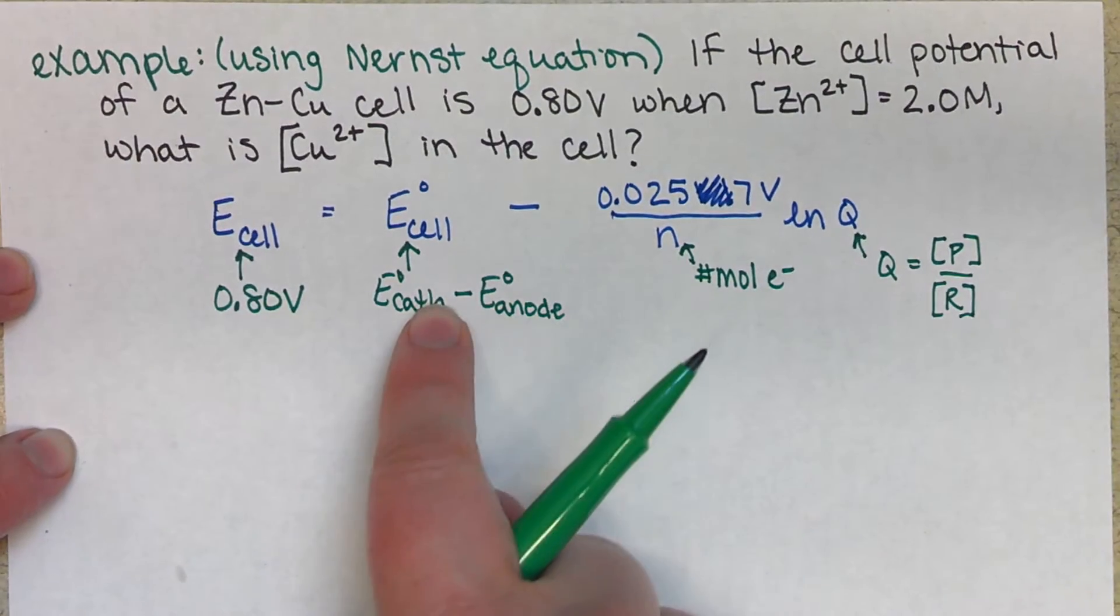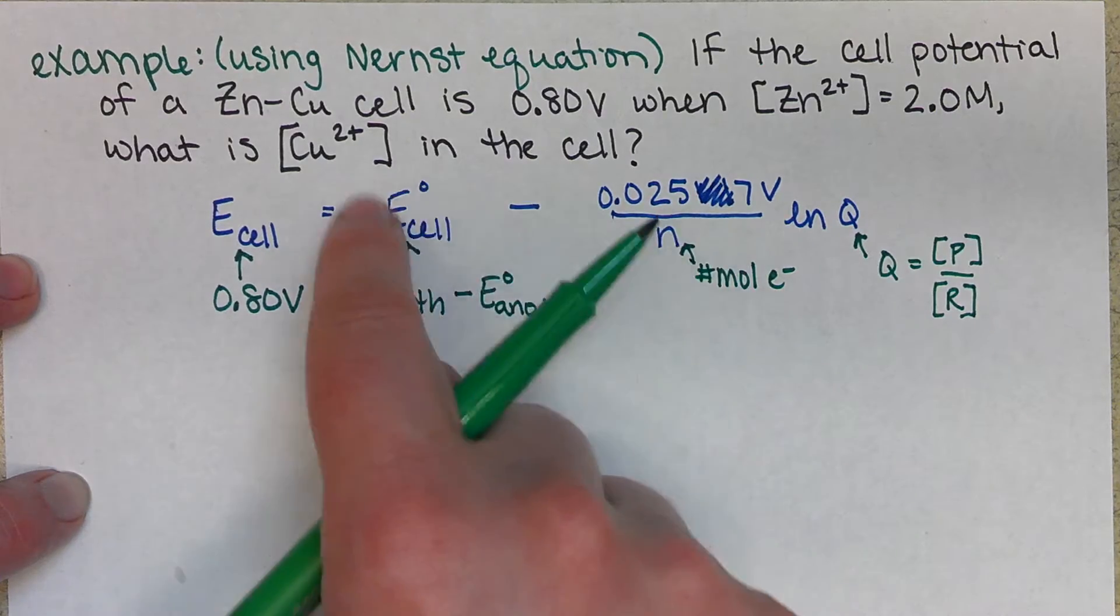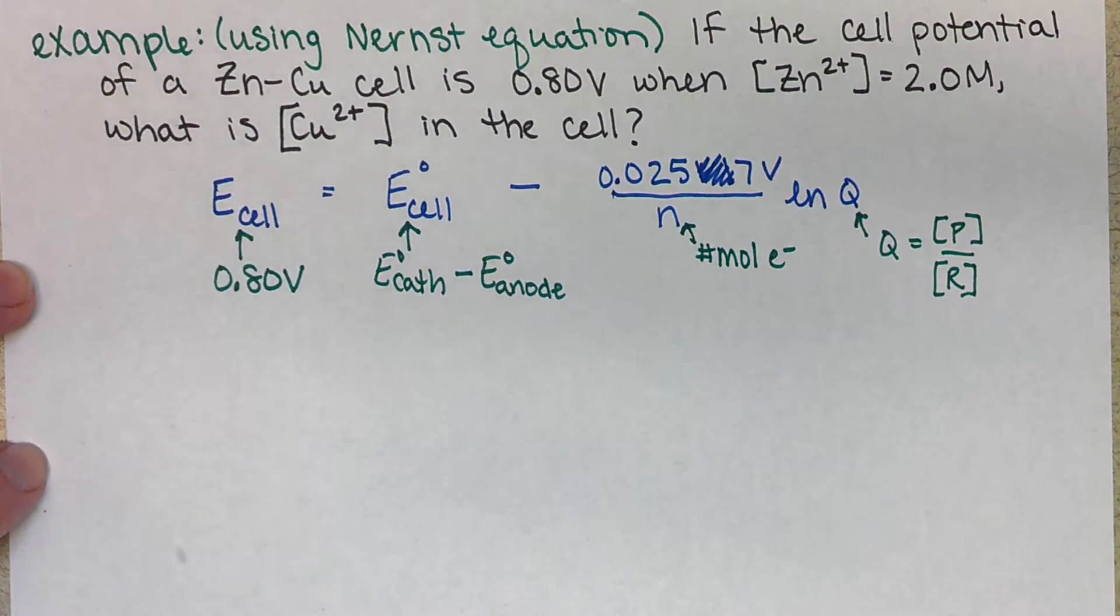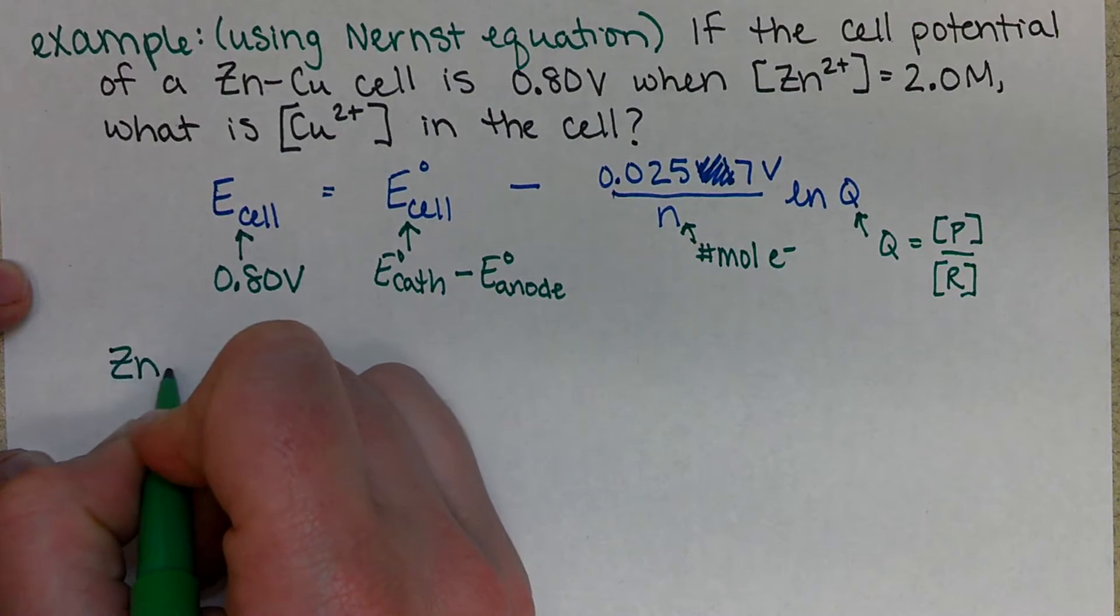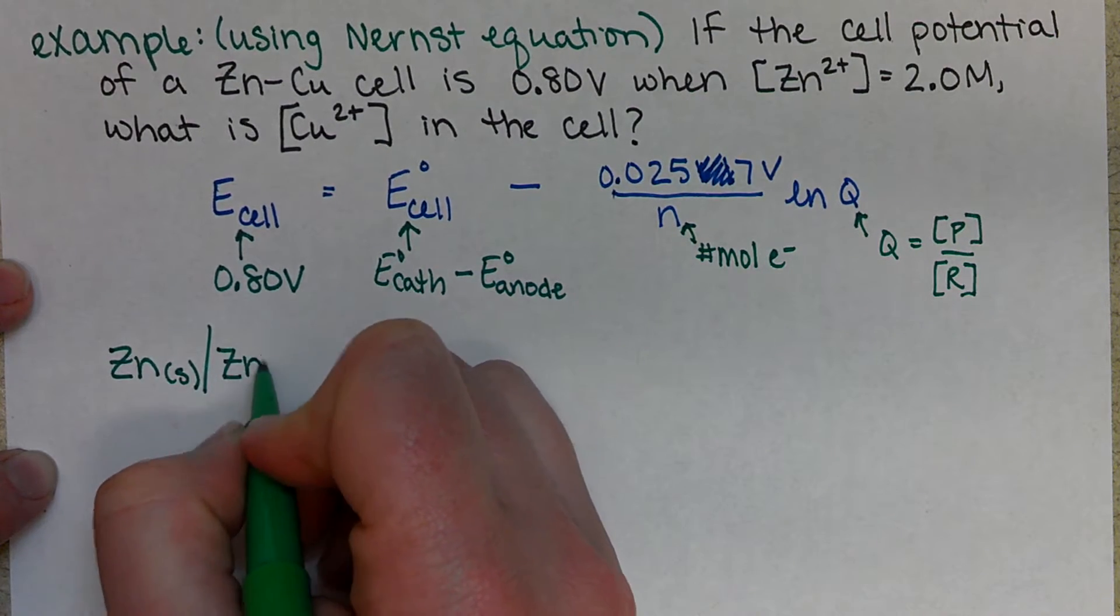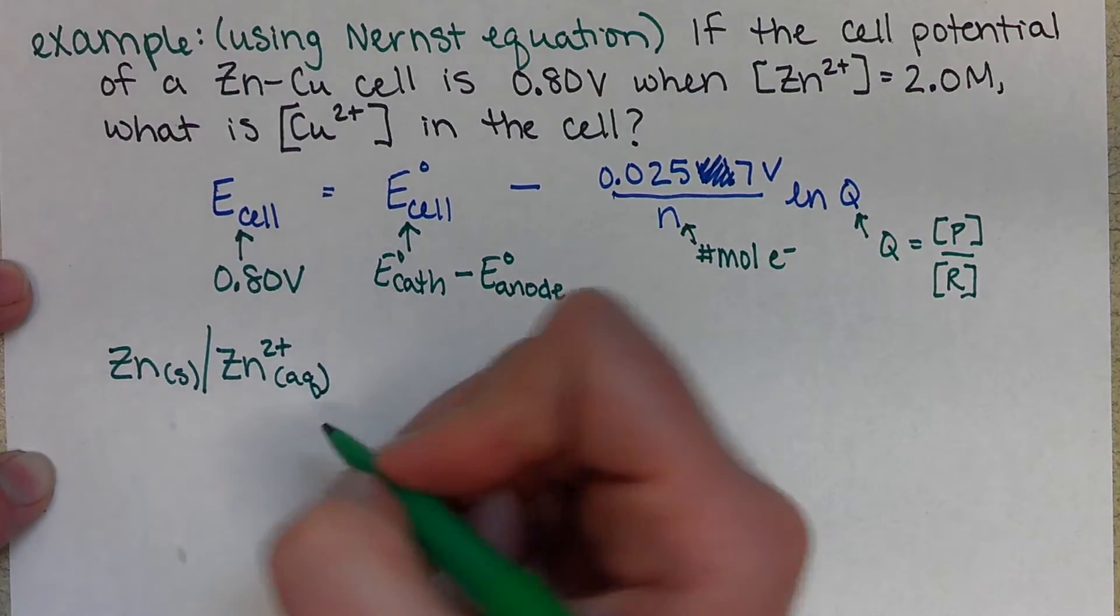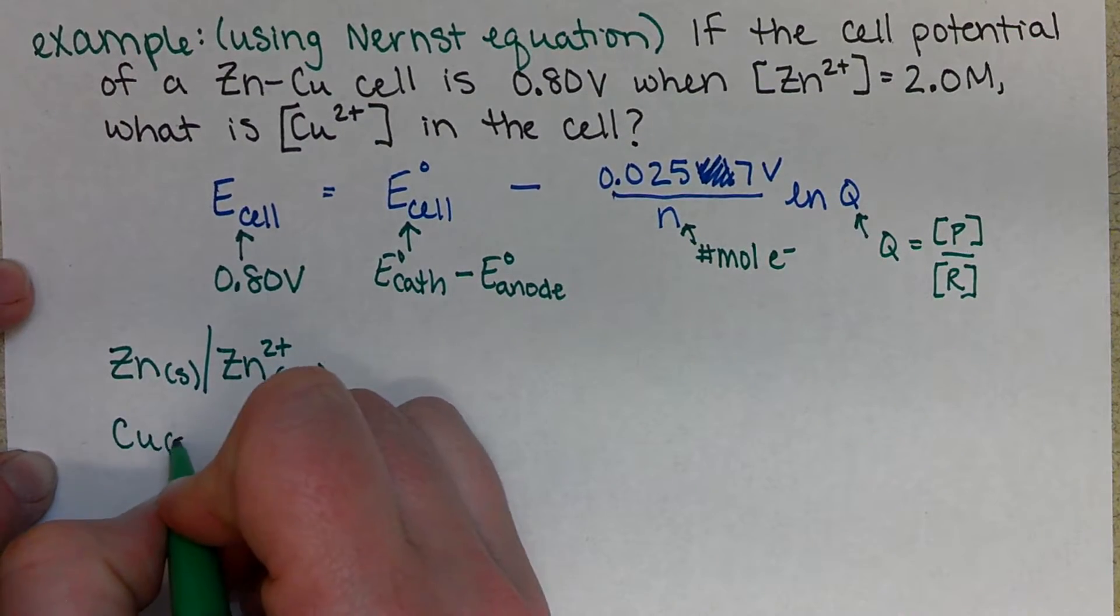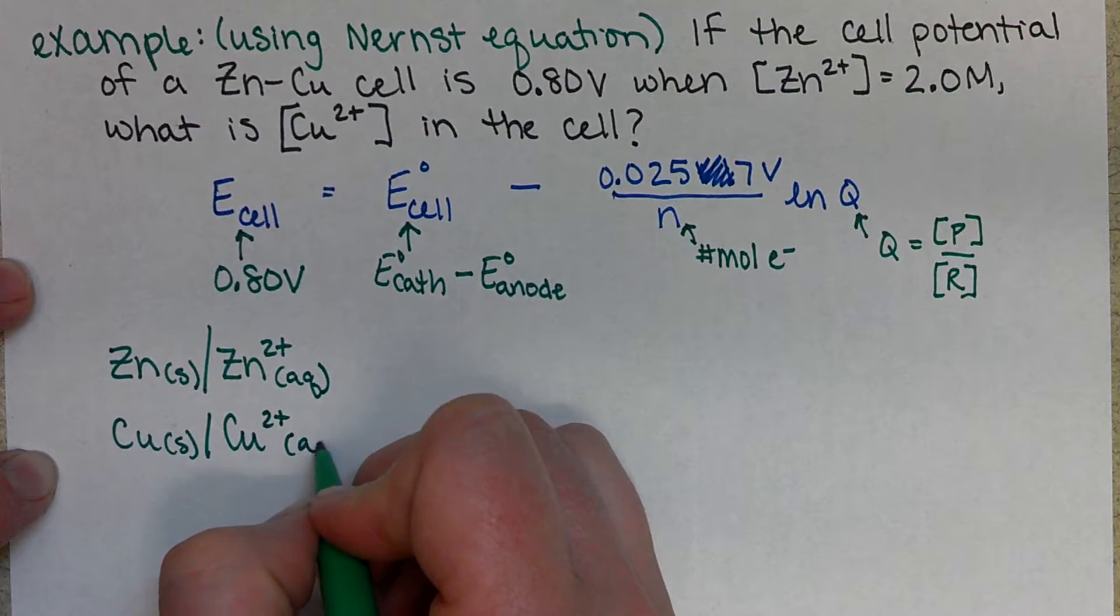So our first step is we're going to have to figure out which one's going to be our cathode and which is our anode, and we're going to set those up so that our E-cell standard is positive since this will be a spontaneous cell. We know that we're involving zinc metal, and our zinc metal also has zinc ion in solution, so that's one half-reaction. Our other half-reaction has copper and copper 2 plus ion.